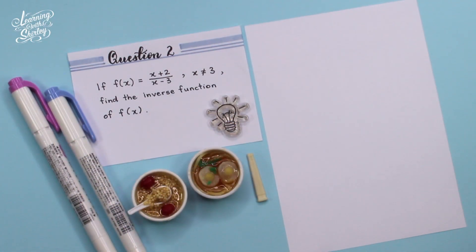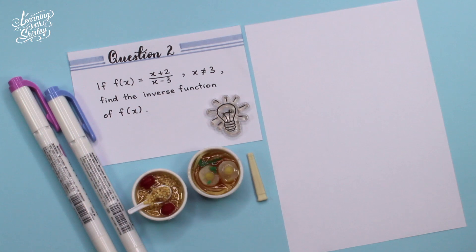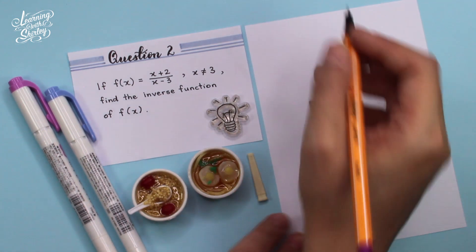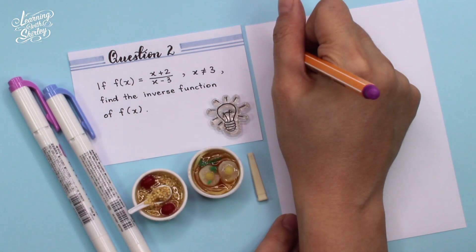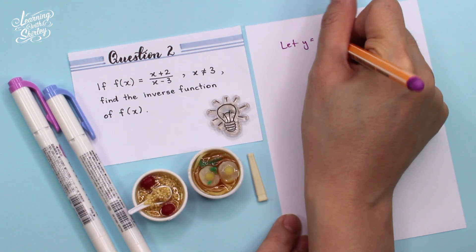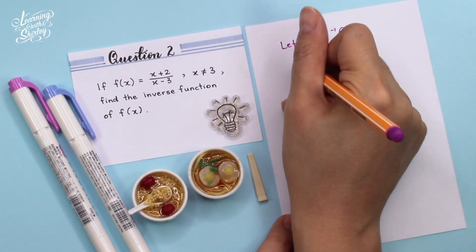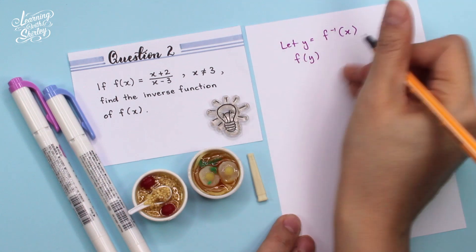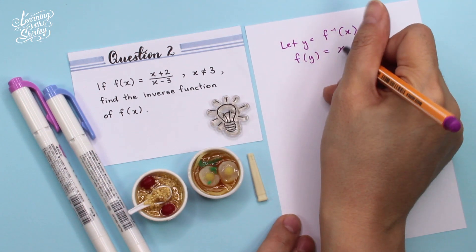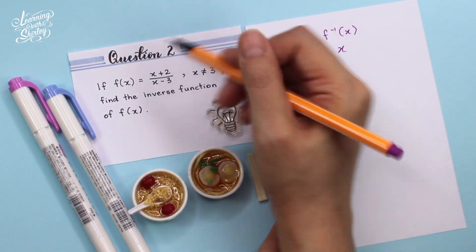For question number 2, if f(x) is equal to (x plus 2) over (x minus 3), whereby x is not equal to 3, find the inverse function of f(x). So firstly, we let y equal to f⁻¹(x). Therefore, f(y) is equal to x.